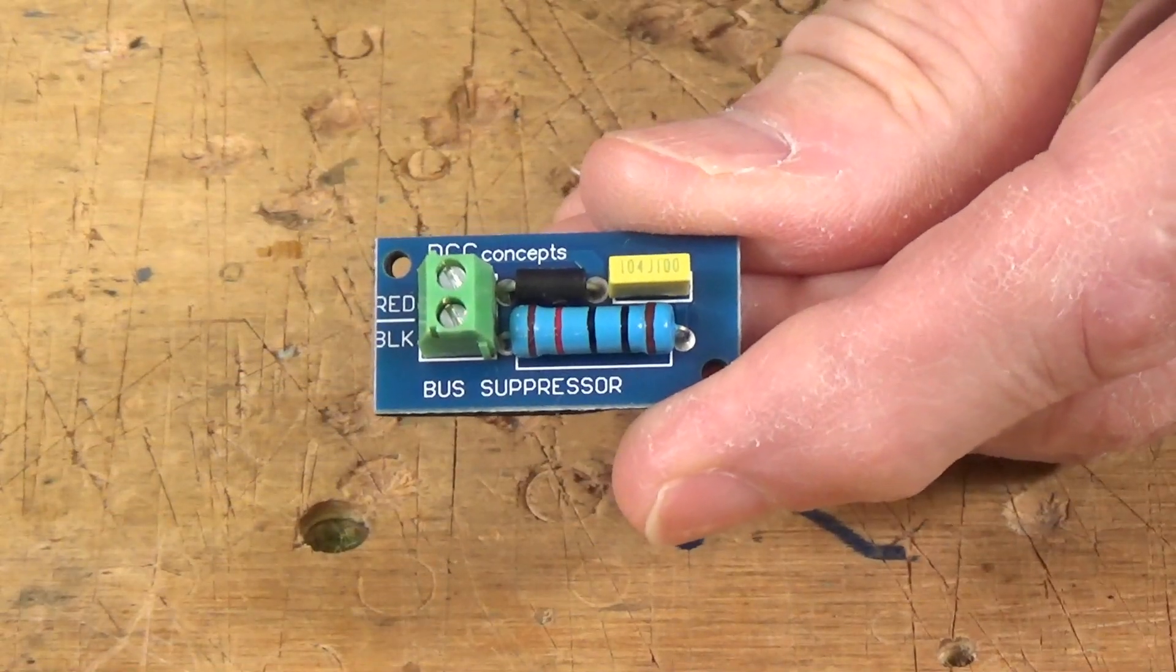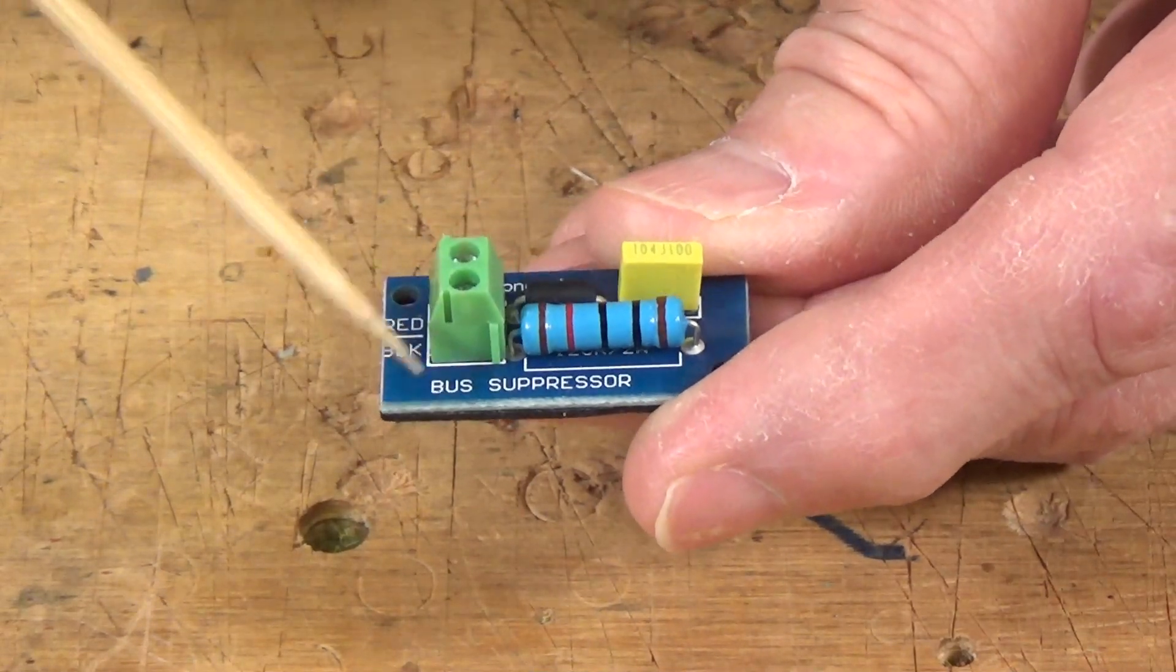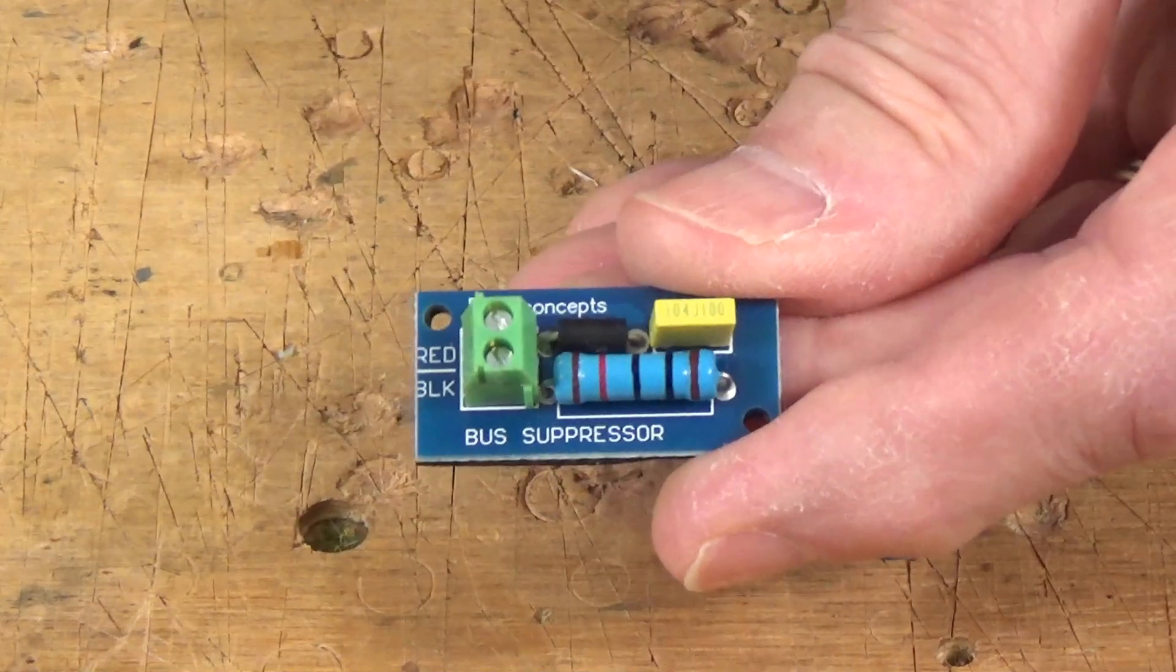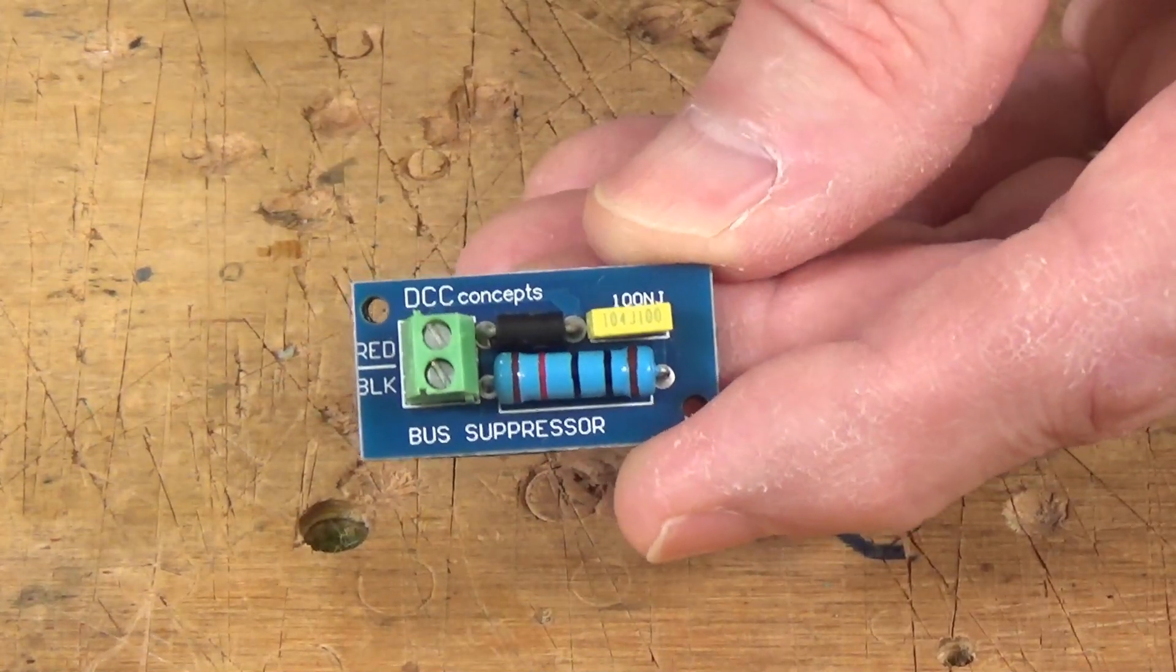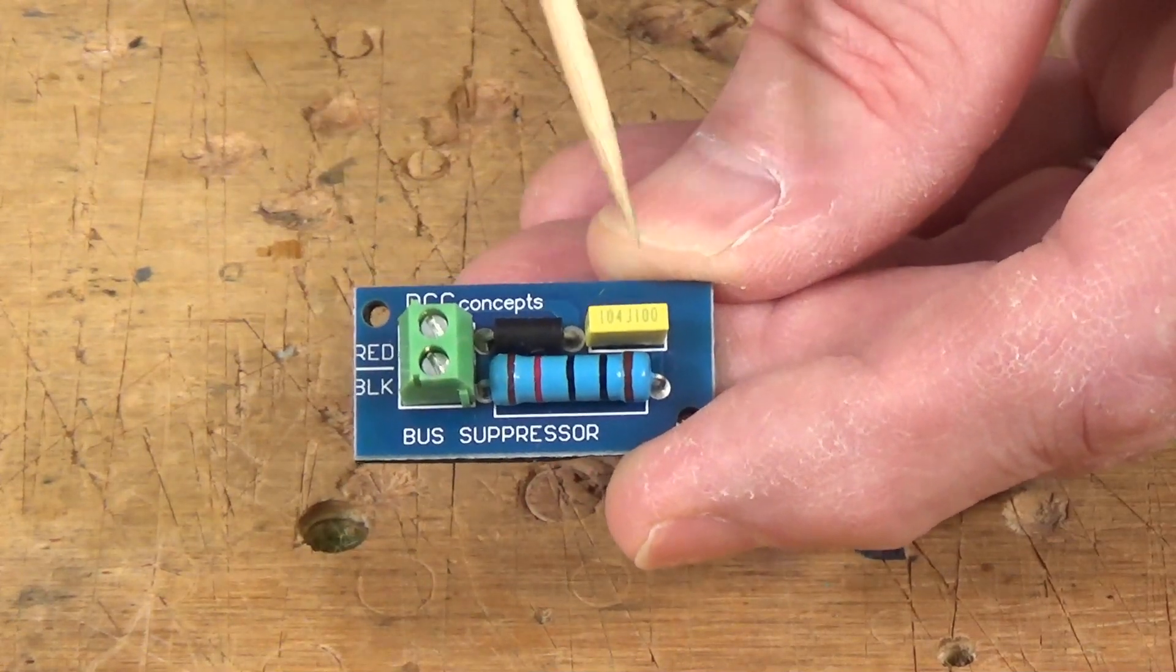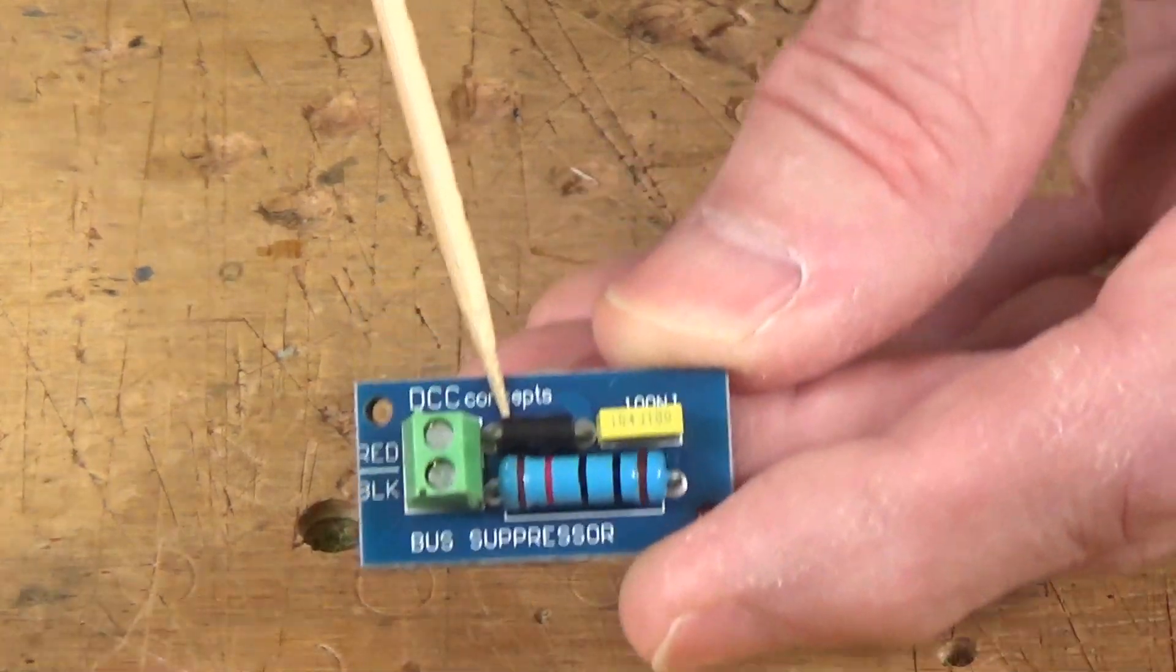While we're on the subject of DCC Concepts products, let me show you a few things here on the workbench to answer a question that came up after a previous video. In my video a couple of weeks ago on DCC track power, I showed you the DCC Concepts bus suppressor, their equivalent of an RC filter. Someone asked what the third component is on here because normally there's two components. On this one we have a capacitor and a resistor, the RC filter. But what's this little black thing here that looks like a barrel?